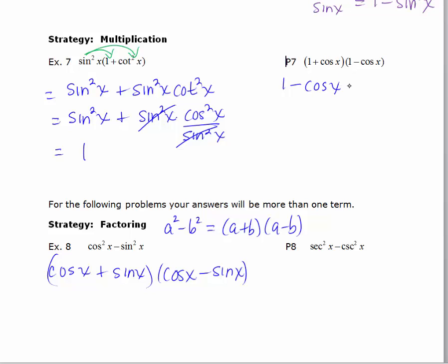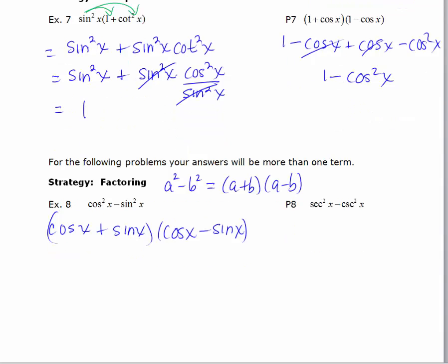And then multiply the inner, which would be plus cosine x. And then multiply the last, which would be minus cosine squared x. The inside terms cancel and you get 1 minus cosine squared x. Now you could have just used the same idea that a plus b times a minus b equals a squared minus b squared.